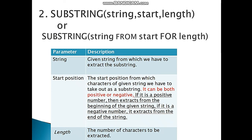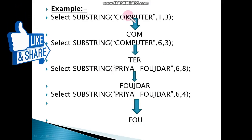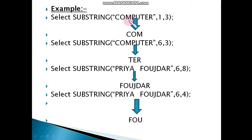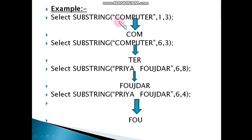In example one with the length parameter, the string is 'computer', the start position is one, and the length is three — meaning we need to take out three characters. Starting from position one, which is 'c', we count one, two, three: c, o, m. So the output will be 'c-o-m'.